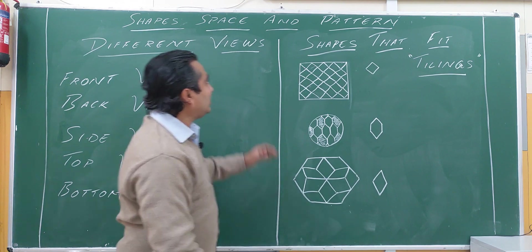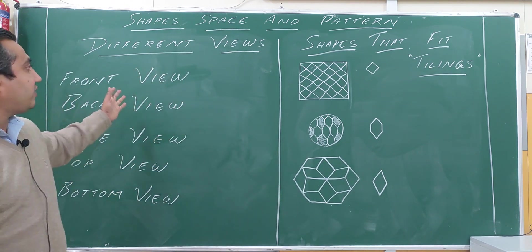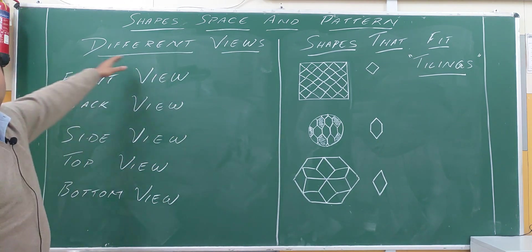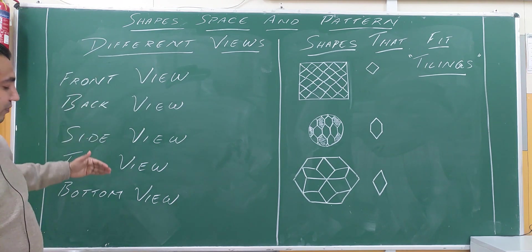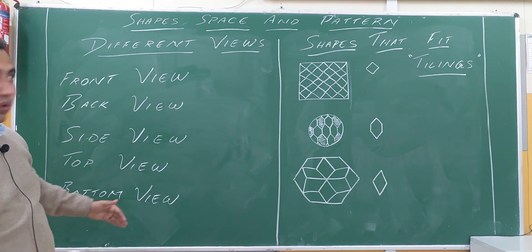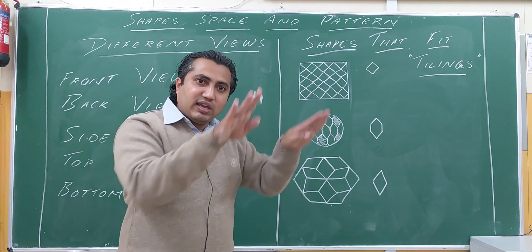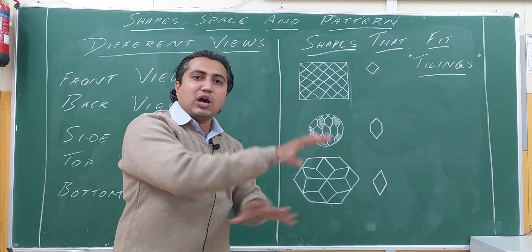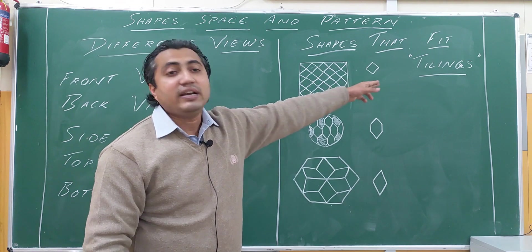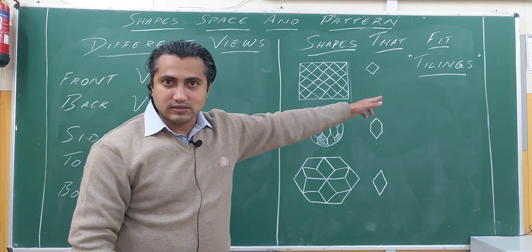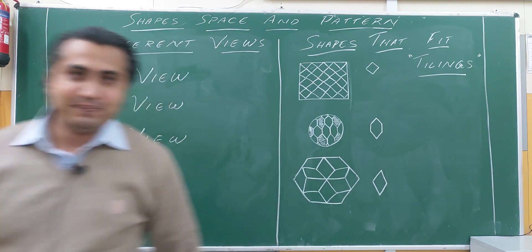So this is the topic that we discussed in this video: different views — front view, back view, side view, top view, bottom view — and shapes that fit. Different shapes, if they get fixed with each other without any gap in between at all, they are called tilings. Take care of yourself. Bye.